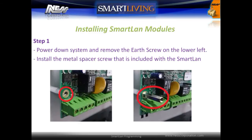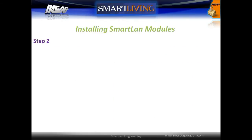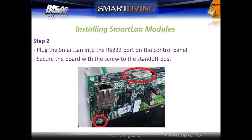To install the Smart LAN module, first power down the system and remove the earth screw from the bottom left-hand corner. Install the metal spacer screw included with the Smart LAN module. Next, plug the Smart LAN module into the RS-232 port on the control panel, then secure the board with the screw to the standoff post.